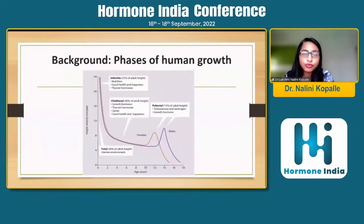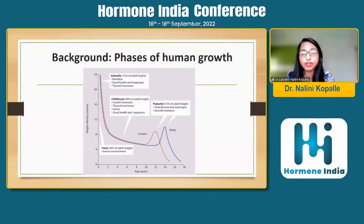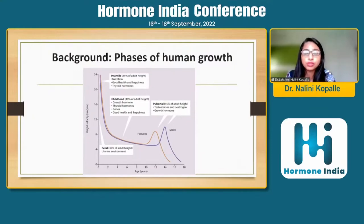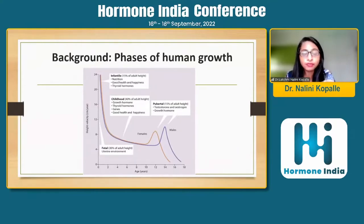Coming to the phases of human growth, it's very important to understand that 30% of adult height is achieved within the span of nine months of intrauterine life. Intrauterine factors play a major role in this phase. The next rapid growth phase is the infantile phase, where within the first one year the infant gains about 15% of adult height. In childhood, from around one to two years onwards till the pre-pubertal phase of about six to eight years, the child grows about 40%, and then the pubertal growth spurt contributes the next 15%. Various factors can impact growth during these phases.